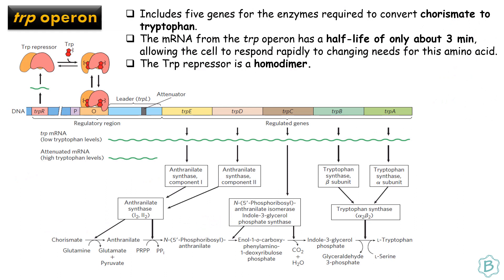The tryptophan operon has 5 genes for the enzymes required to convert chorismate to tryptophan. The mRNA from the tryptophan operon has a half-life of only about 3 minutes, allowing the cell to respond rapidly to changing needs of this amino acid.